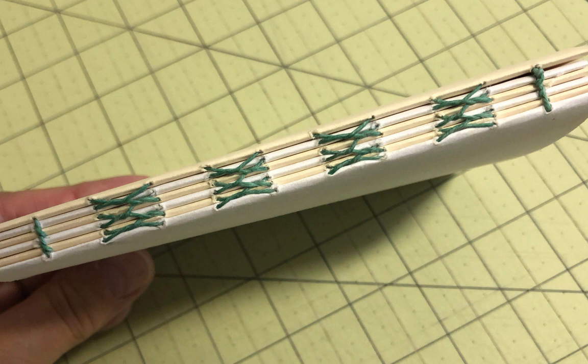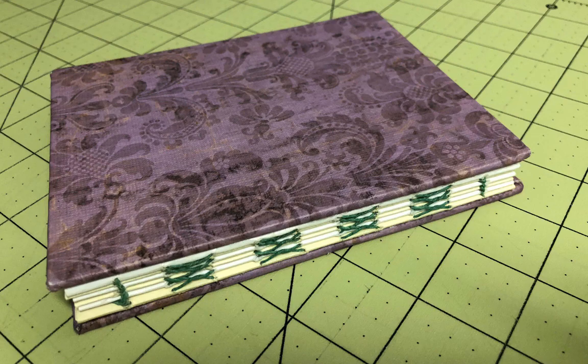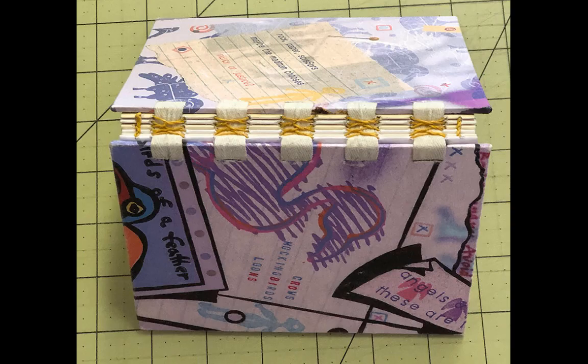This video shows the stitch in its simplest form without covers, but covers can be added after the fact by gluing boards to the first and last pages. However, I think there are better ways of adding covers that require incorporating them into the initial construction, sewing them to the signatures.